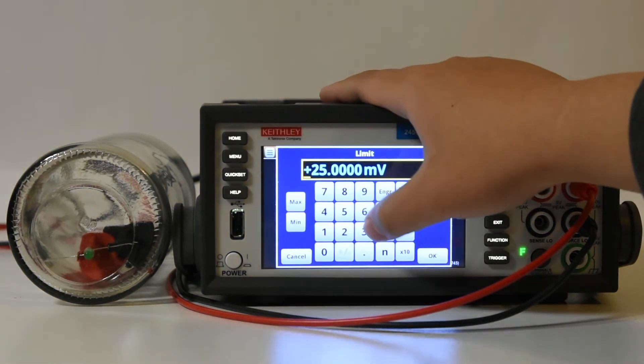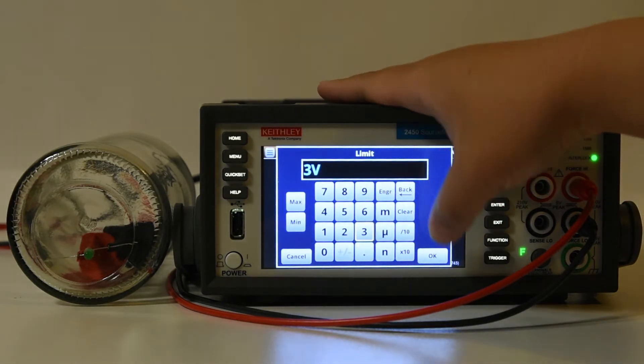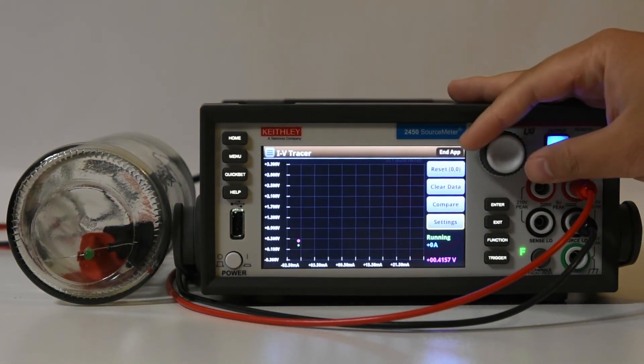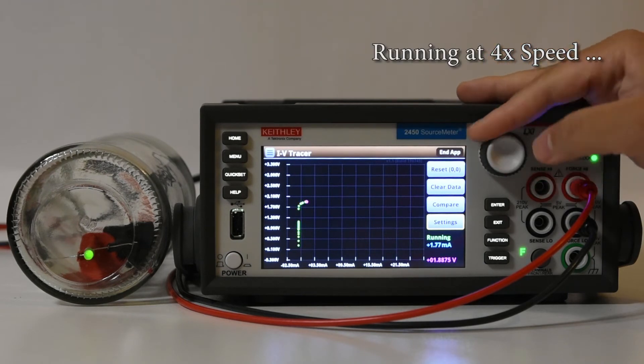This takes advantage of the 2450's true current source capability, thus we are now stepping current to trace the LED, producing a better graph, although with the axes swapped.